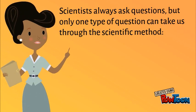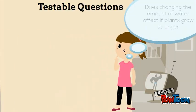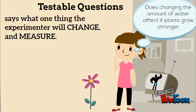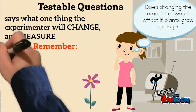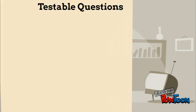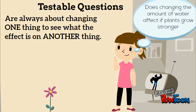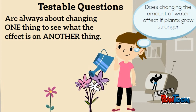Scientists always ask questions, but only one type of question can take us through the scientific method — and that is testable ones! Testable questions say what one thing the experiment will change and measure. Remember, the testable question must be based on fact, not opinion. Testable questions are always about changing one thing to see what effect it has on another thing. For instance, does changing the amount of water affect if plants grow stronger?